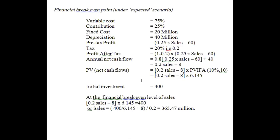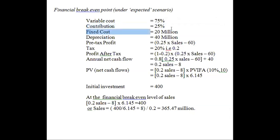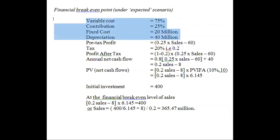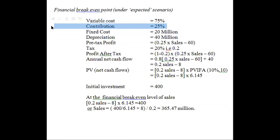Now, on the screen is the solution for the financial break-even point. The variable cost given in the problem is 75%, and the contribution margin ratio — calculated as revenue minus variable cost divided by revenue — is 25%. The fixed cost given is 20 million and depreciation is 40 million. These four components are either given in the problem or already calculated.